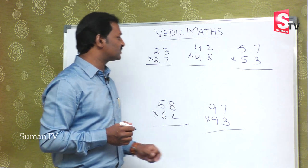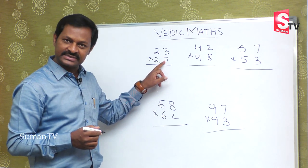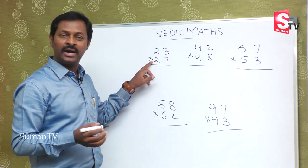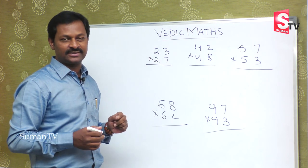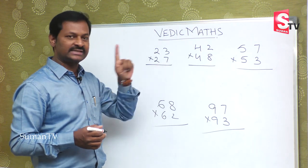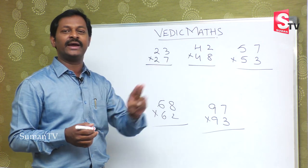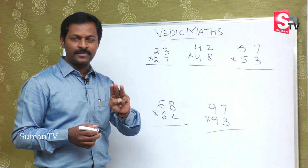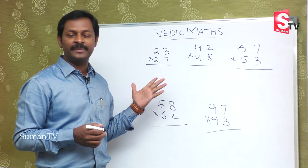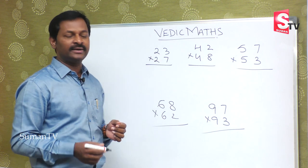In the traditional method, we multiply with 7, then multiply with 2, and do an addition — so there is a three-step methodology: multiplication with 7, multiplication with 2, and addition. But in the Vedic method, we have a direct method.